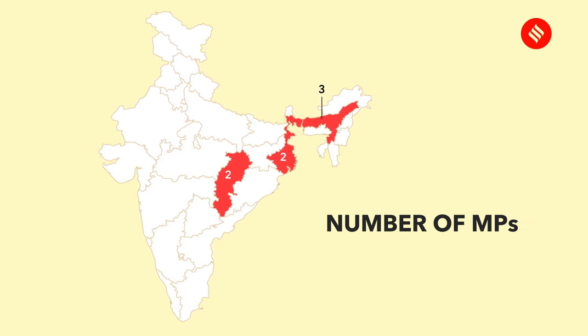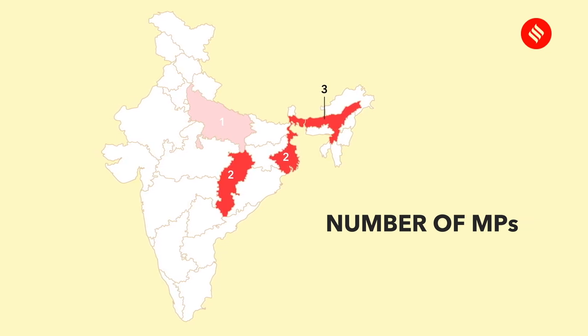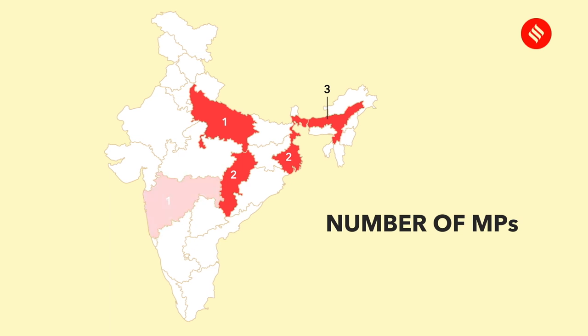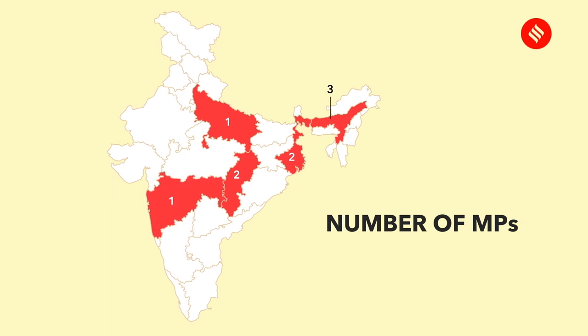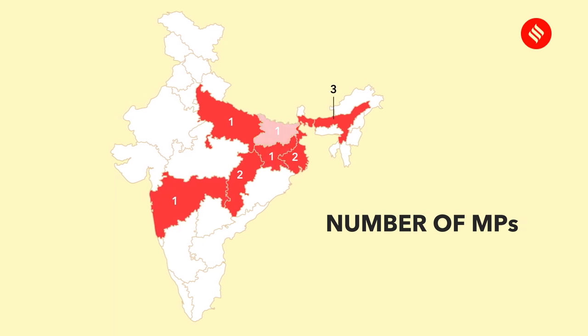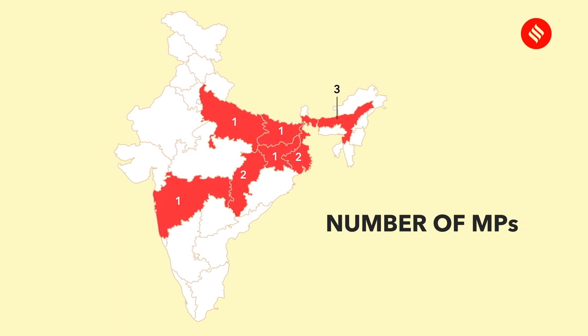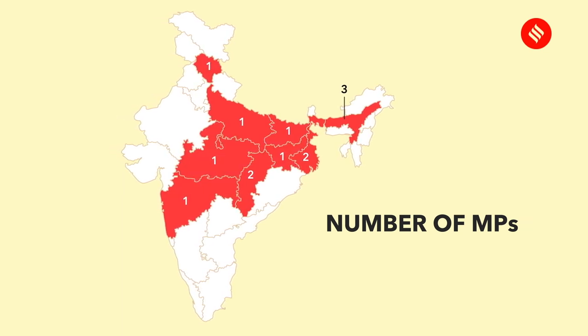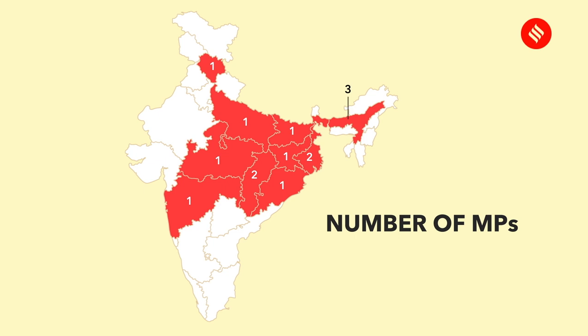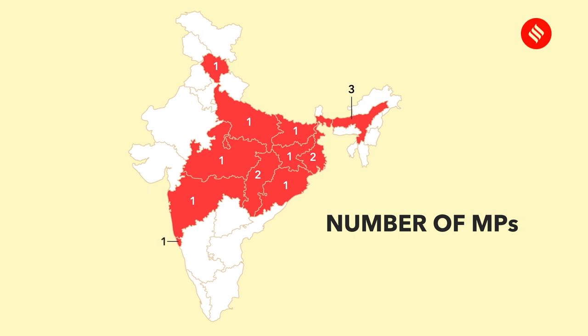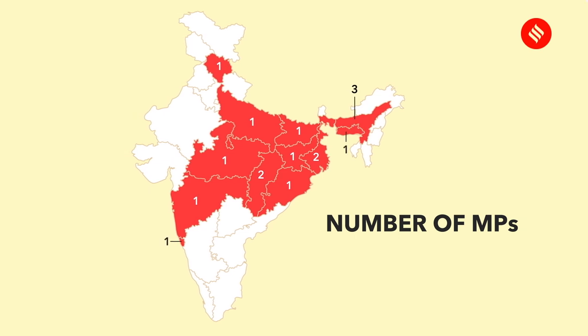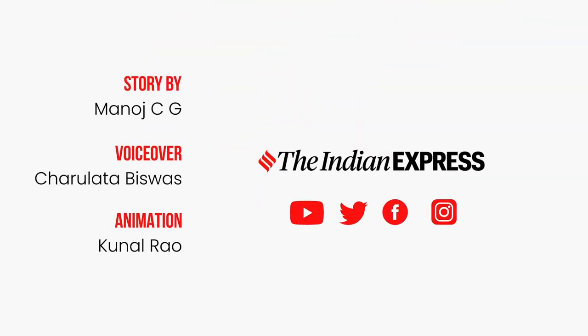Among these states with just 1 MP are Uttar Pradesh, Maharashtra, Jharkhand, Bihar, Madhya Pradesh, Himachal Pradesh, Odisha, Goa, and Meghalaya.